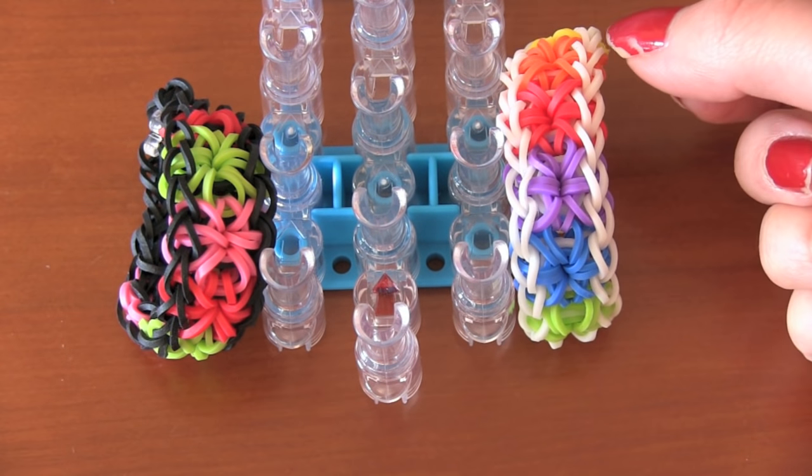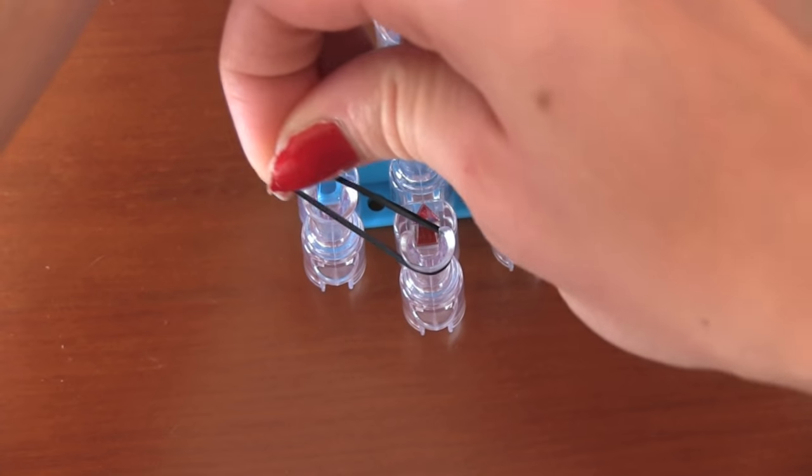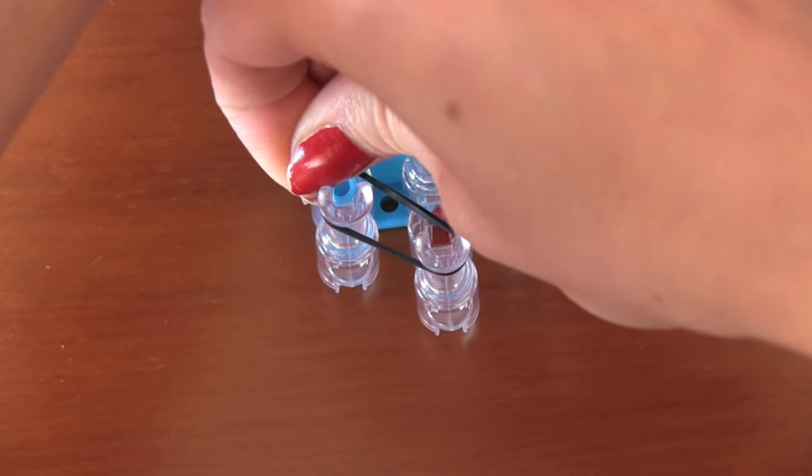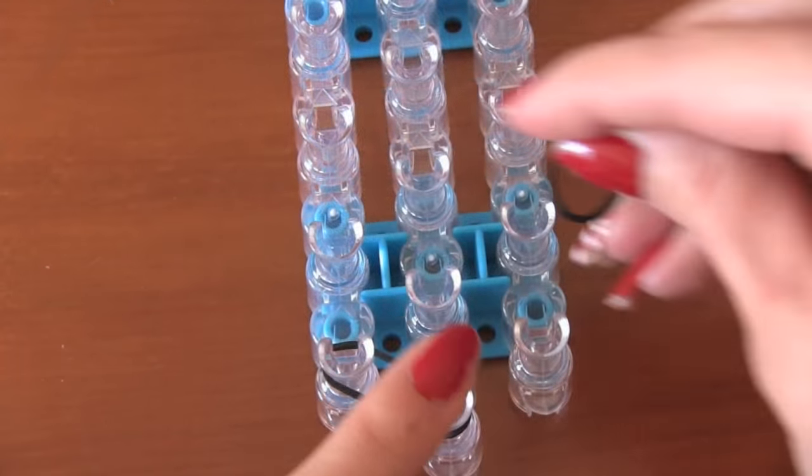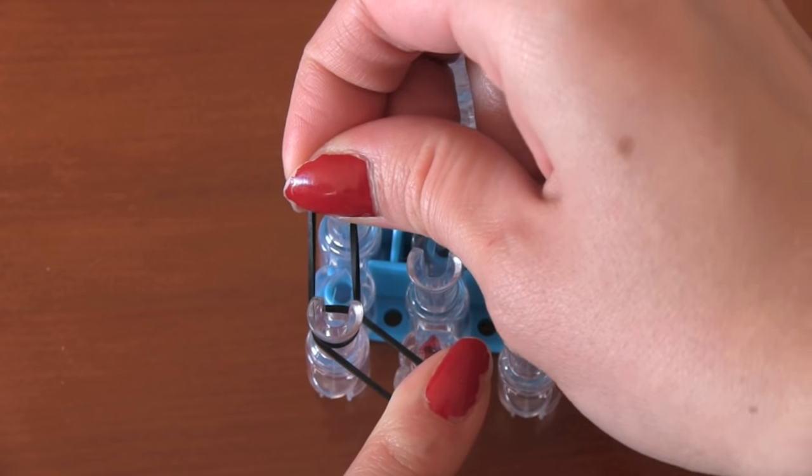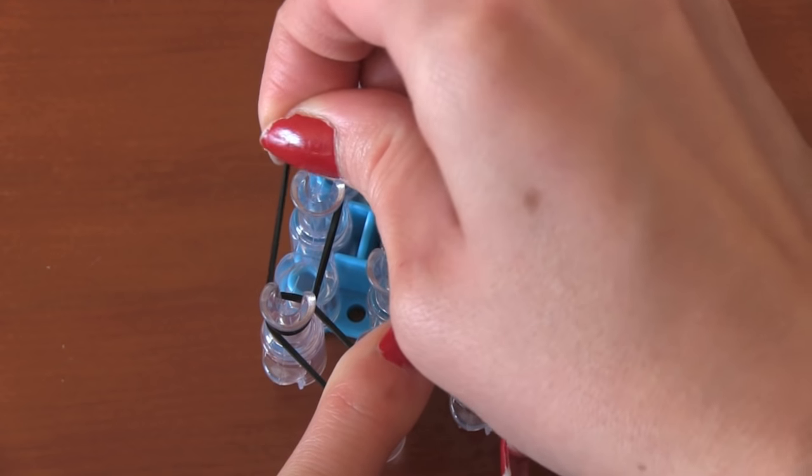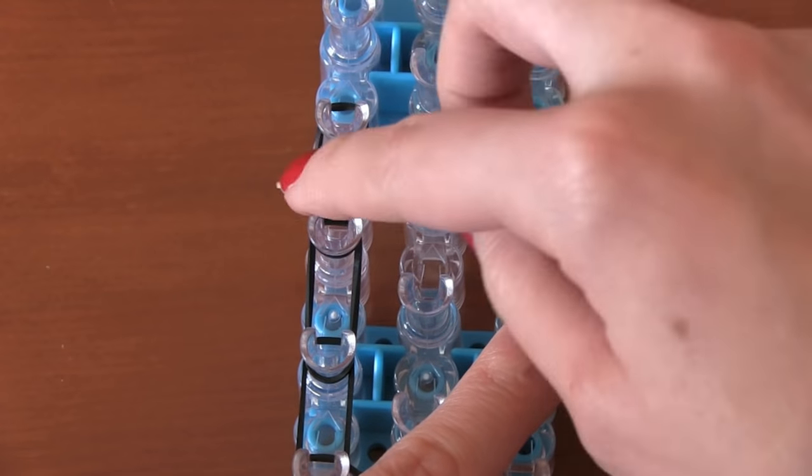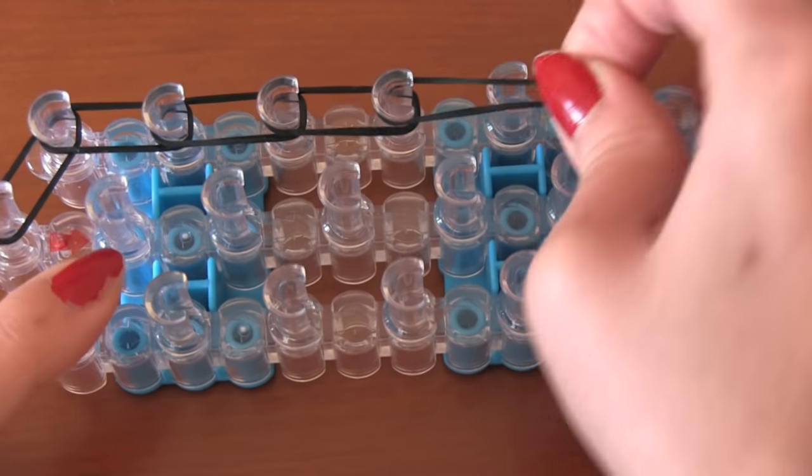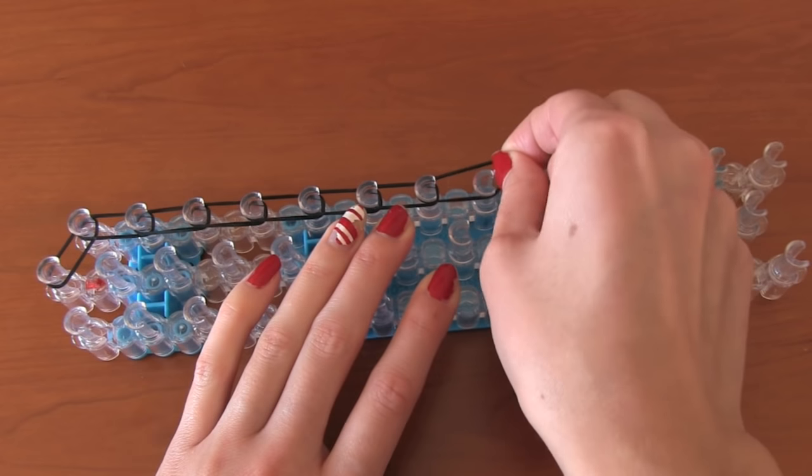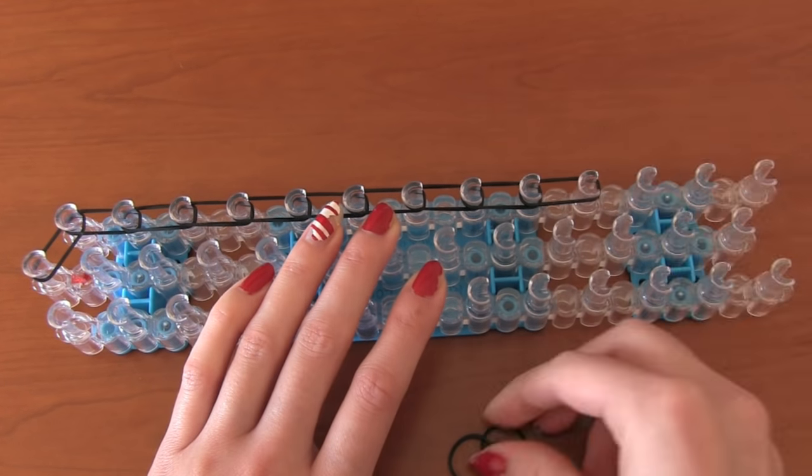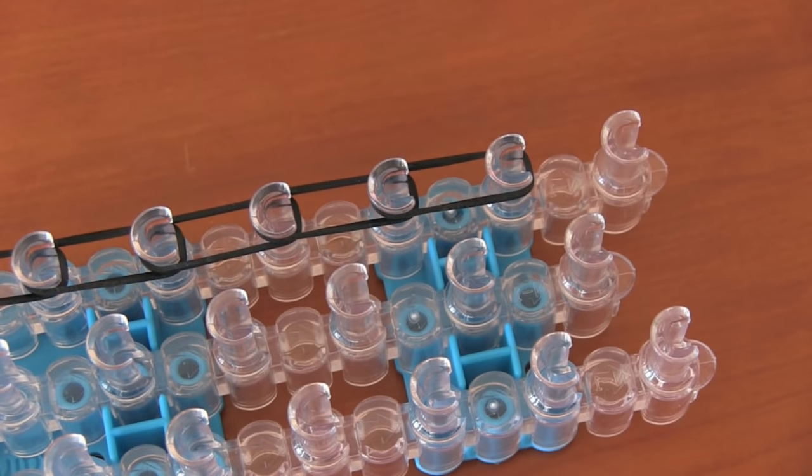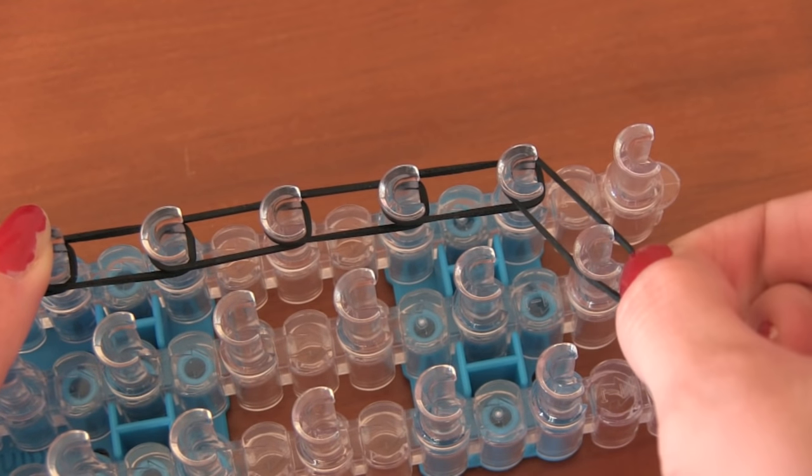Then you're going to begin putting on your border color. Take a band and put it on the middle and first left peg. Then another band and place it on the first left and second left peg. You're just going to continue by placing bands all the way up this side of the loom. Once you get near the end, you're going to stop at the second to last left peg and place a rubber band from that one to the middle.